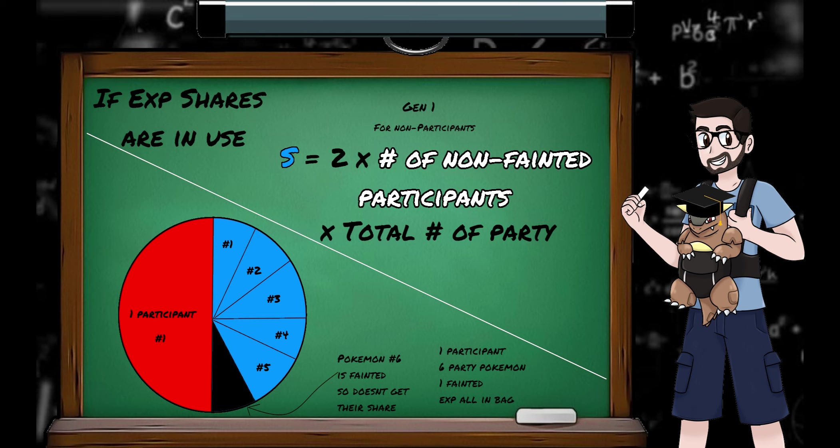Visualising that, we see for one participant in a team of six with an XP all and one of our Pokemon is fainted, Pokemon 1 gets half of the experience for participating, and then each of the six, including Pokemon 1, get a sixth of the share half, although the fainted Pokemon's experience gets lost.